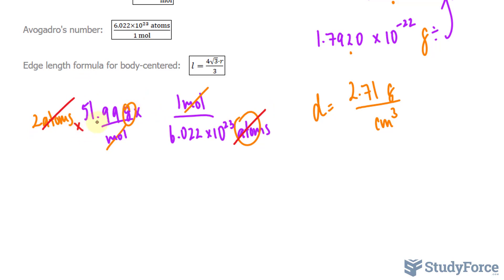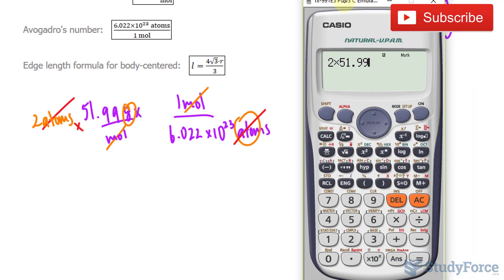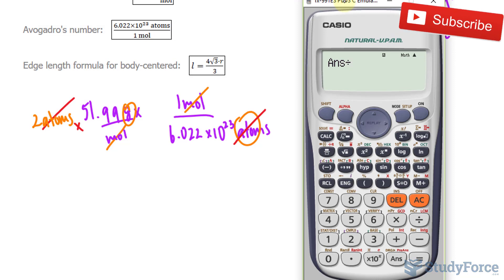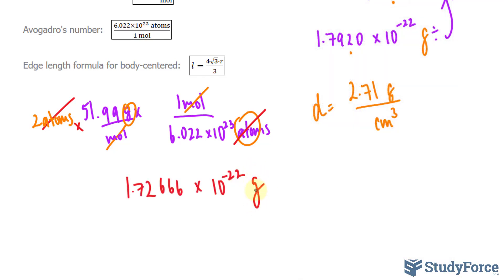Let's use our calculator: two times 51.99 divided by 6.022×10²³. Our answer should be rounded to four significant figures, giving 1.7267×10⁻²² grams. I'll keep as many digits as possible since we're not done — premature rounding would introduce error at the end.